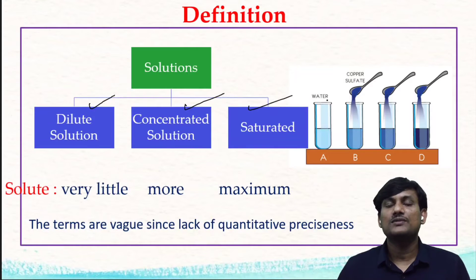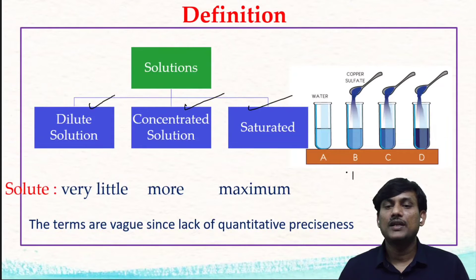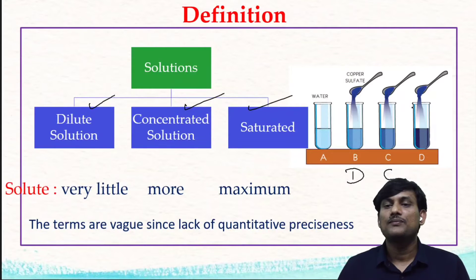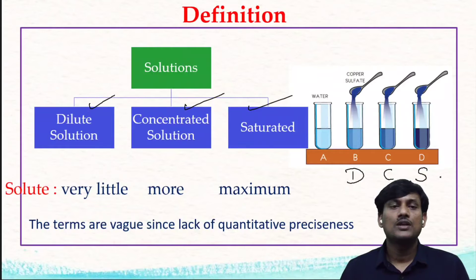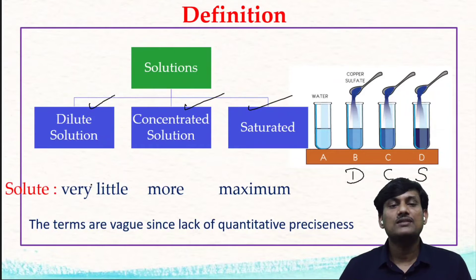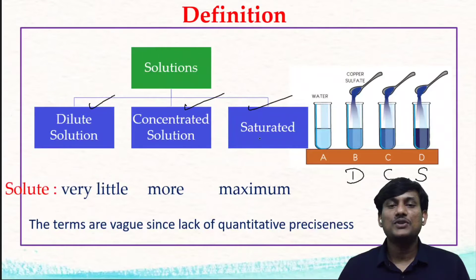Let us take water as solvent. When you dissolve a very little amount of copper sulfate, there is a formation of a dilute solution. When you dissolve more amount of copper sulfate, there is a formation of a concentrated solution. When you add the maximum amount of copper sulfate to the water, there is a formation of a saturated solution. You can prepare a dilute solution by adding very little solute, a concentrated solution by adding more solute, and a saturated solution by adding the maximum amount of solute to the solvent.